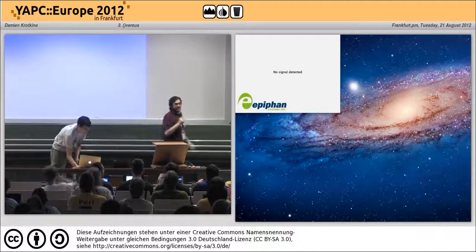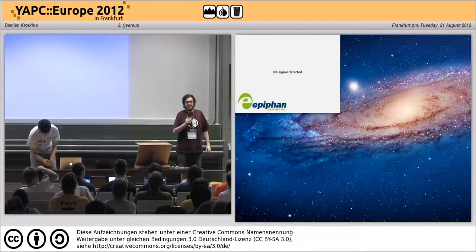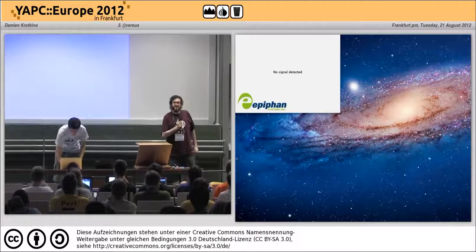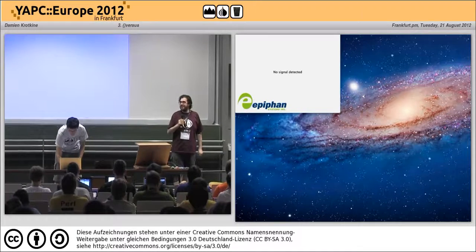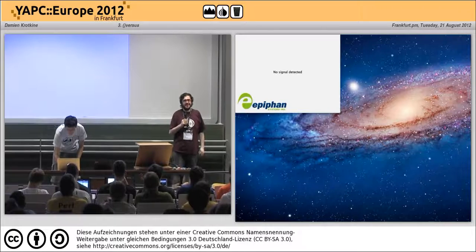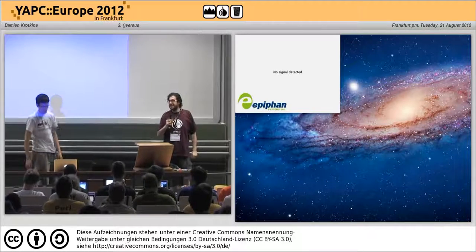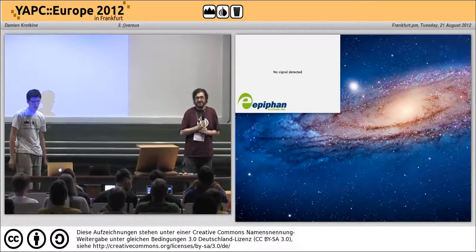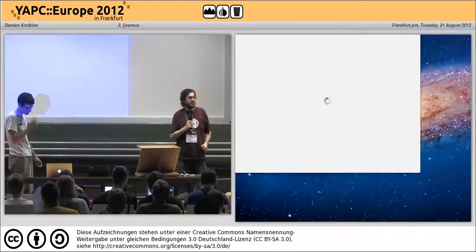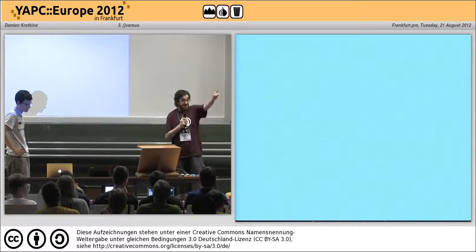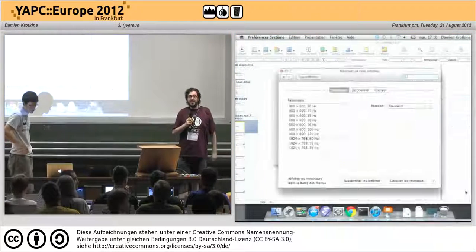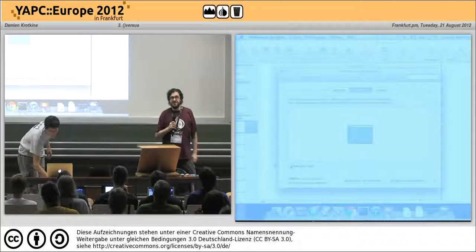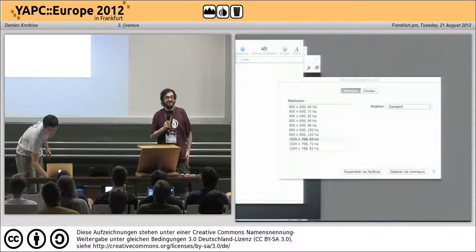Hi, I'm Aaron Crane. I help run blogs.perl.org, which some of you may have heard of. I'm here to say that we would love some help in making it better — making it a better thing for the Perl community. If anyone would like to give us a hand on improving it, you can speak to me or Ovid, who's around here somewhere, or Aristotle. Or you can email us at contact@blogs.perl.org and we'd love to talk to you about what you might like to do. Thanks very much.